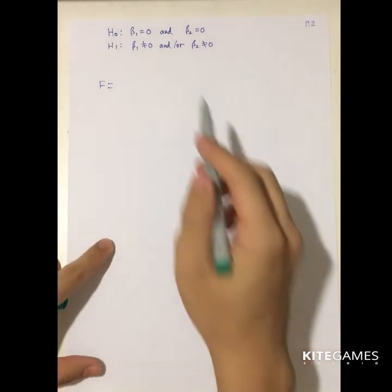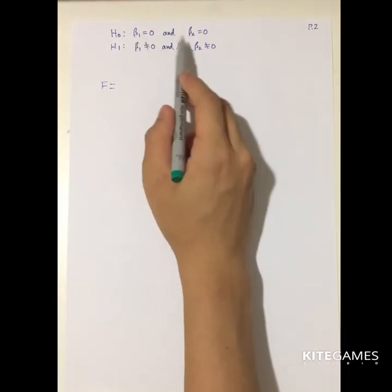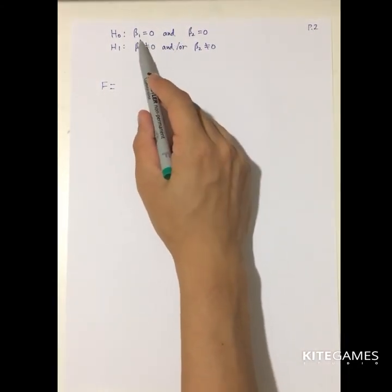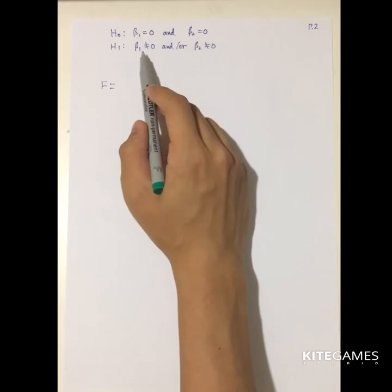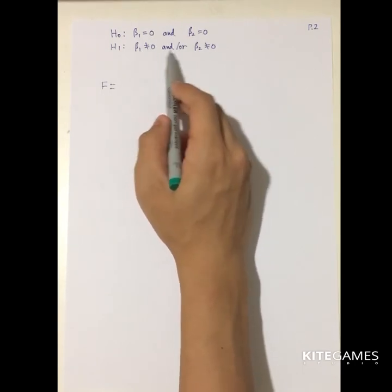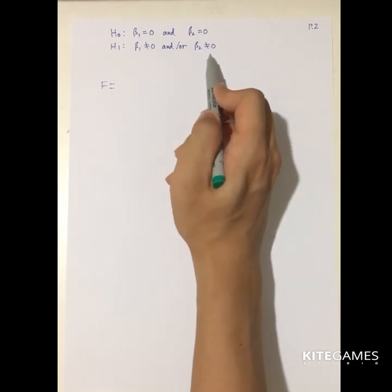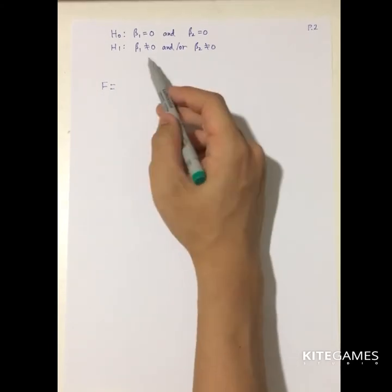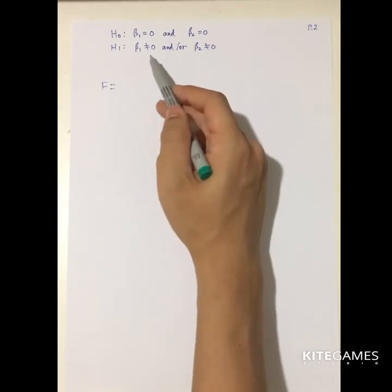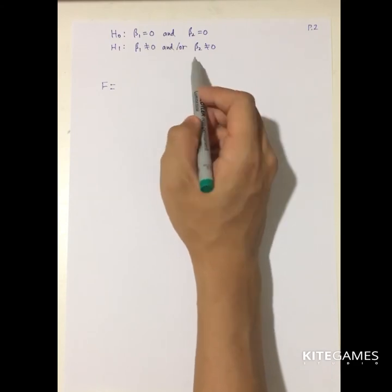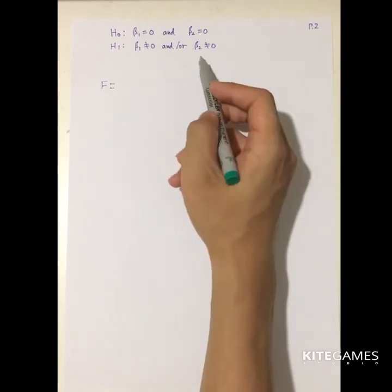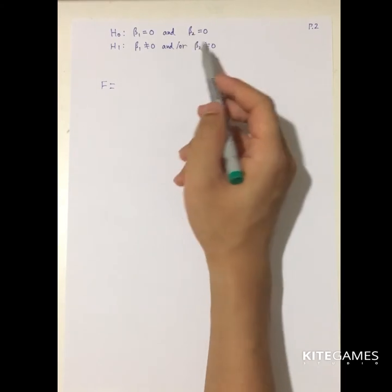You need to set up the null hypothesis. In a two-variable case, the null hypothesis is that beta1 and beta2 equal zero. The alternative is beta1 not equal to zero or beta2 not equal to zero. If beta1 is not equal to zero, it violates the null hypothesis, and likewise if beta2 is not zero.